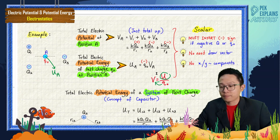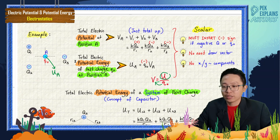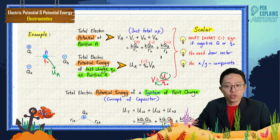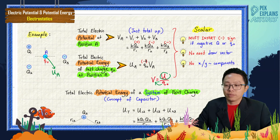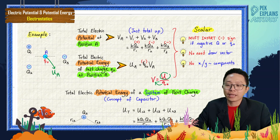Potential energy is also a scalar quantity, and this test charge is a negative test charge. So when you find the potential energy, the test charge must also carry a negative sign. Make sure you substitute the negative value for the test charge. Don't forget the negative sign.